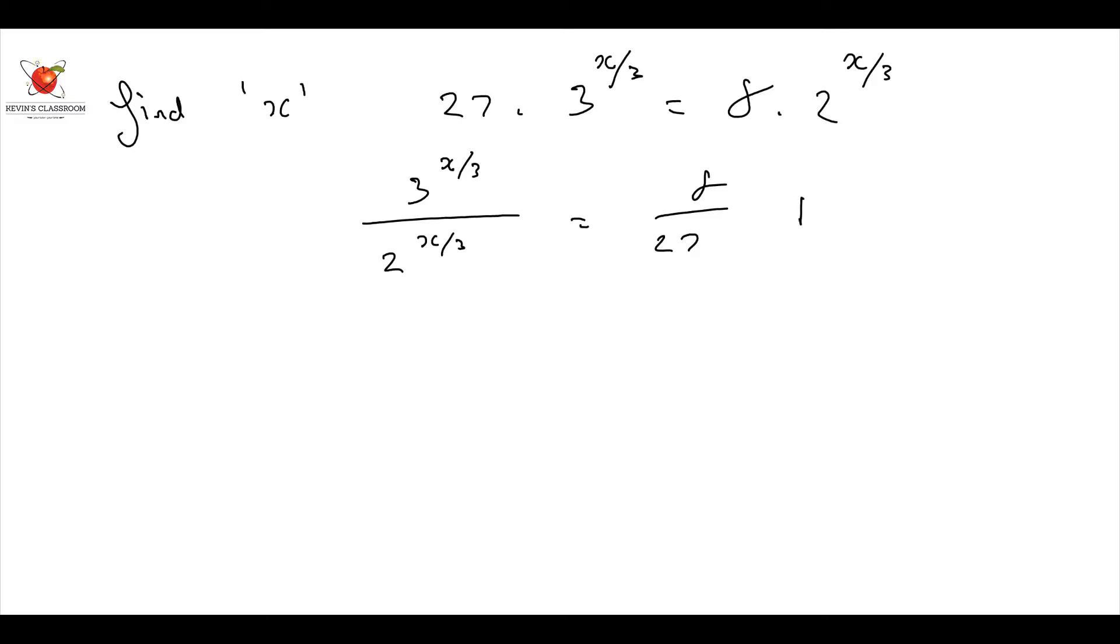Now I must use prime factors here, right? Always exponentials, we use prime factors. Therefore, this is going to be 3 to the power of x over 3 divided by 2 to the power of x over 3 is equal to 2 to the power of 3 over 3 to the power of 3.